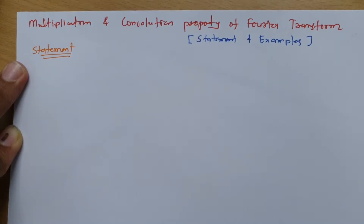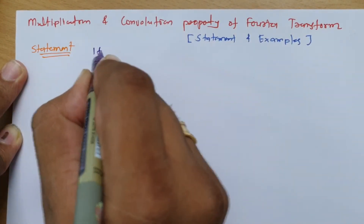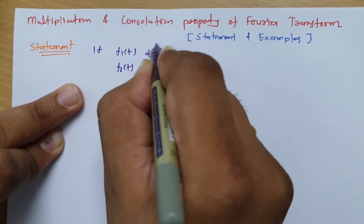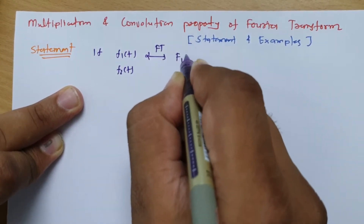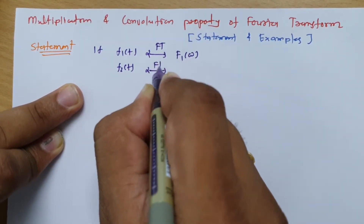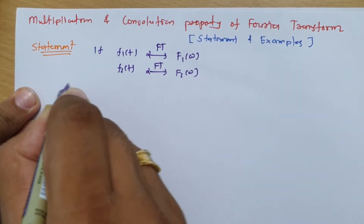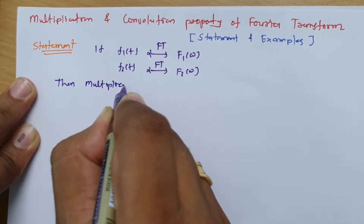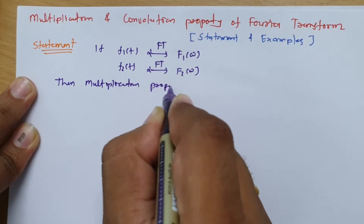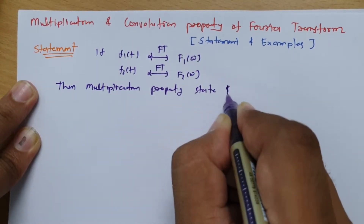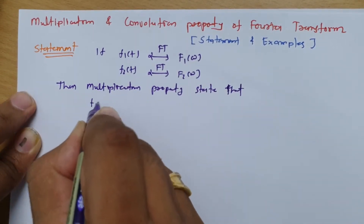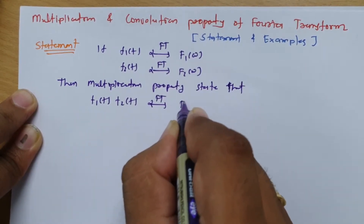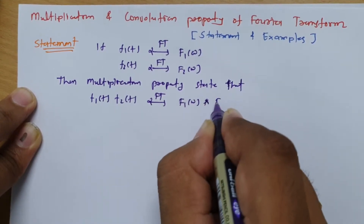For multiplication and convolution we need to have two signals. If we have f1(t) and f2(t), and the Fourier transform of f1(t) is F1(ω) and the Fourier transform of f2(t) is F2(ω), then the multiplication property states that multiplication of two signals f1(t) × f2(t) in the Fourier transform results in convolution of F1(ω) and F2(ω).